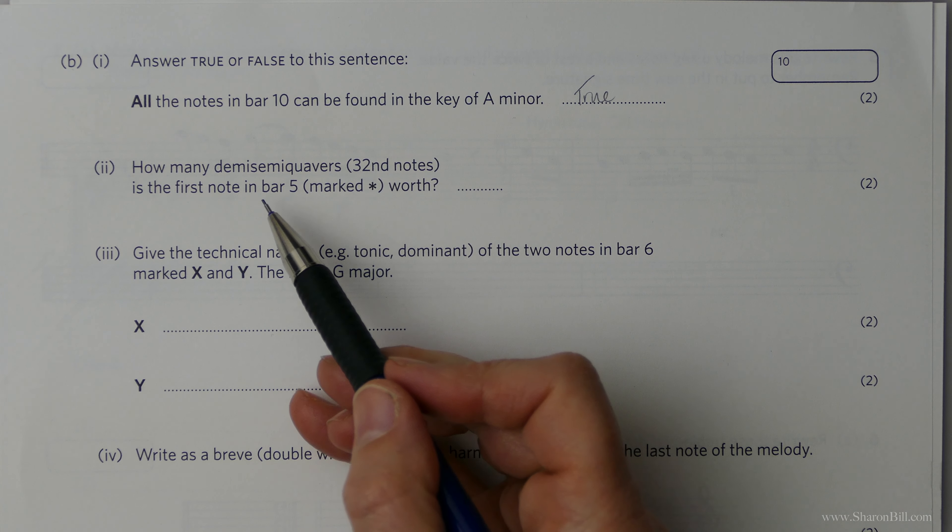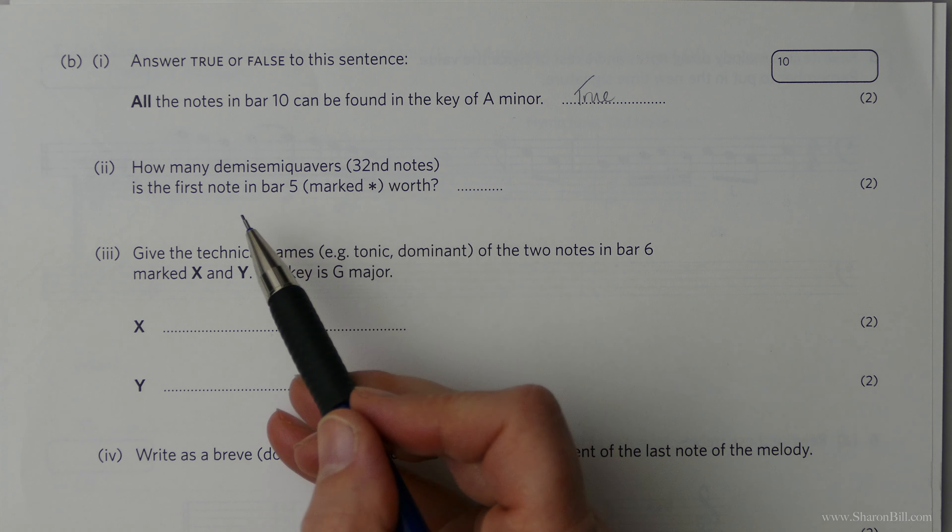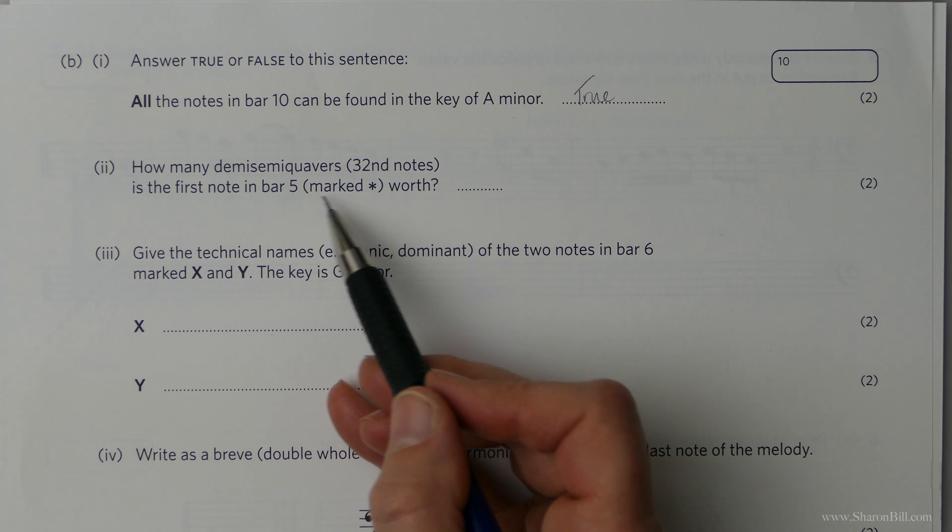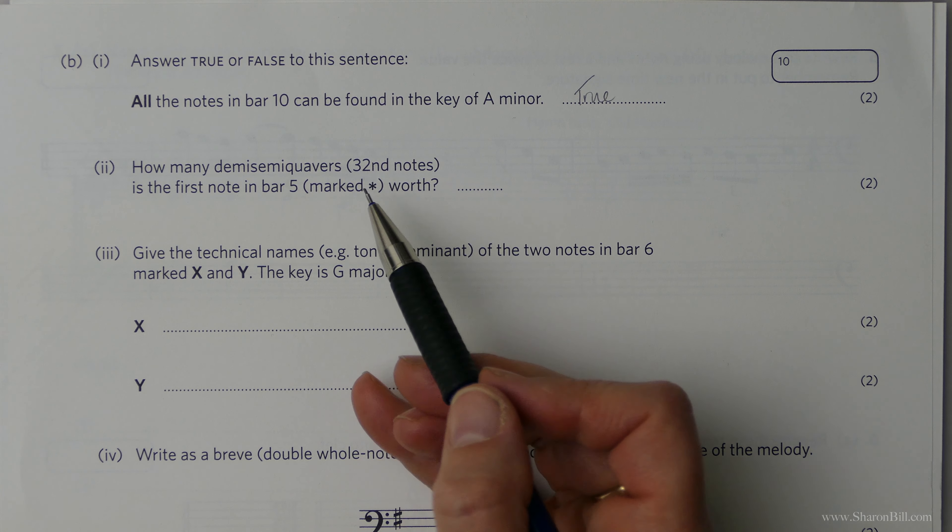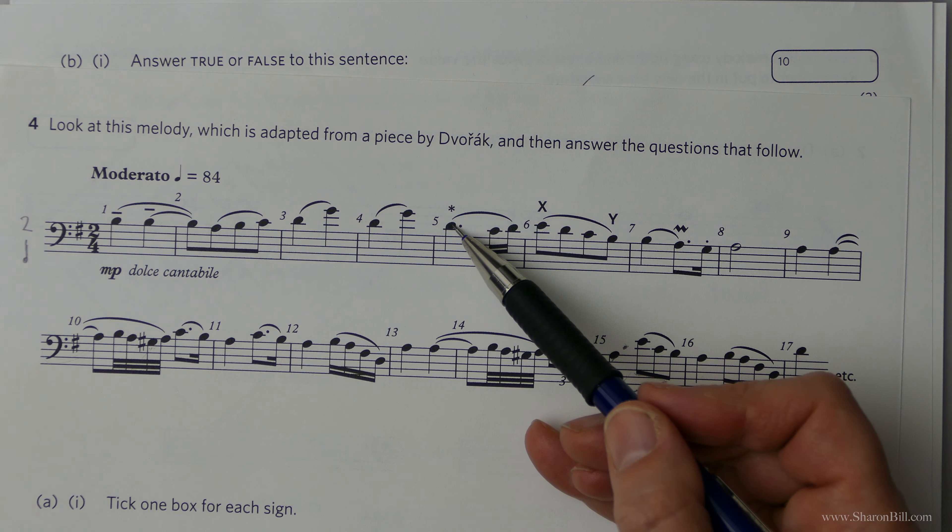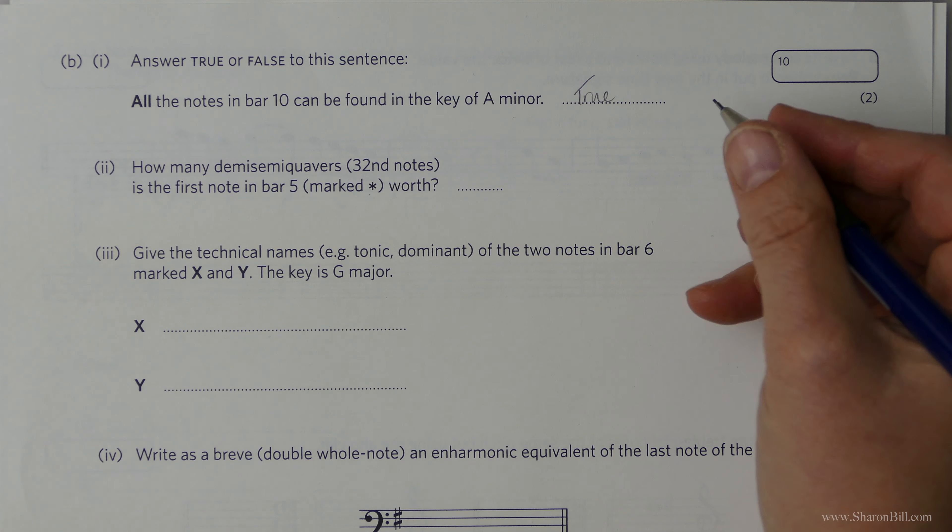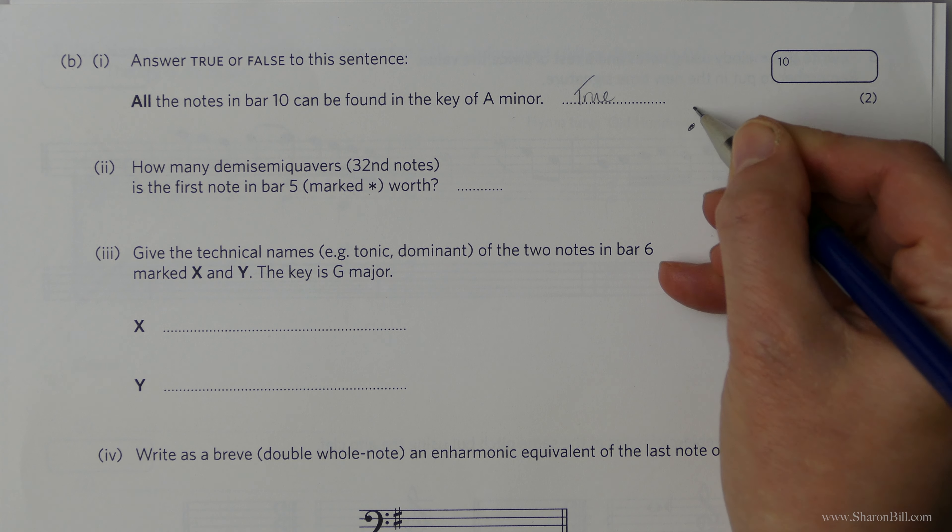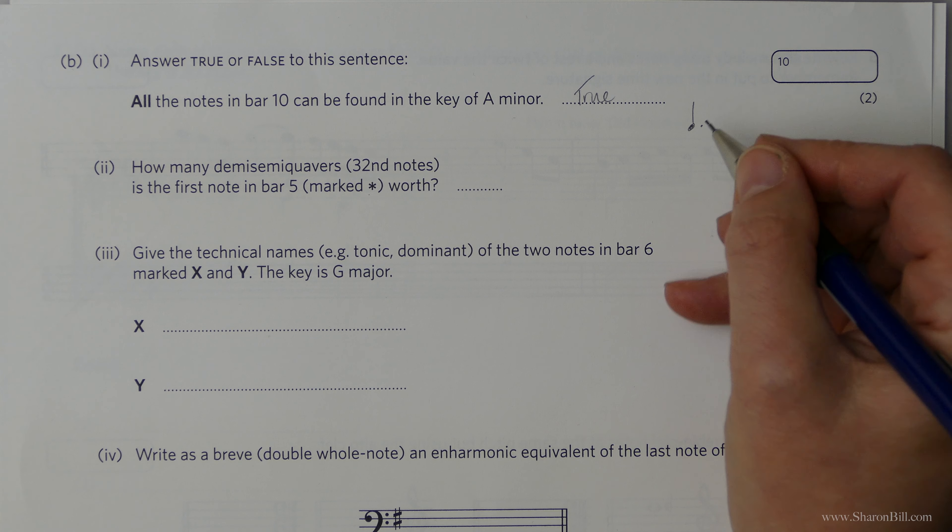Now then, how many demisemiquavers, 32nd notes is the first note of bar five marked with a star worth? So let's see what we've got here. We've got a dotted crotchet, a dotted quarter note. So I'm just going to diagram that out.